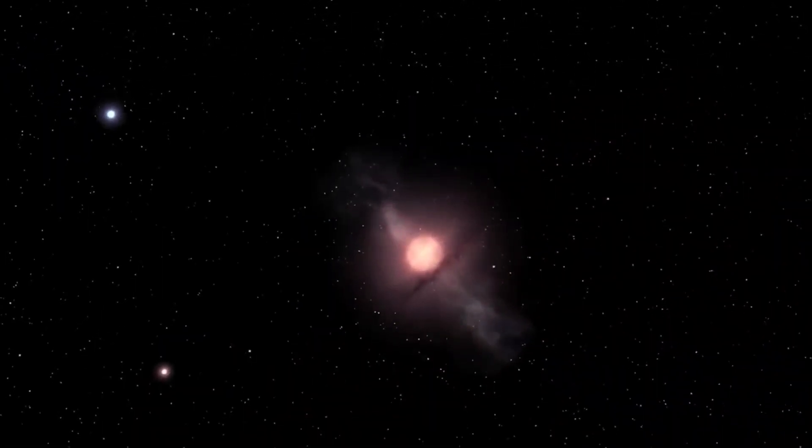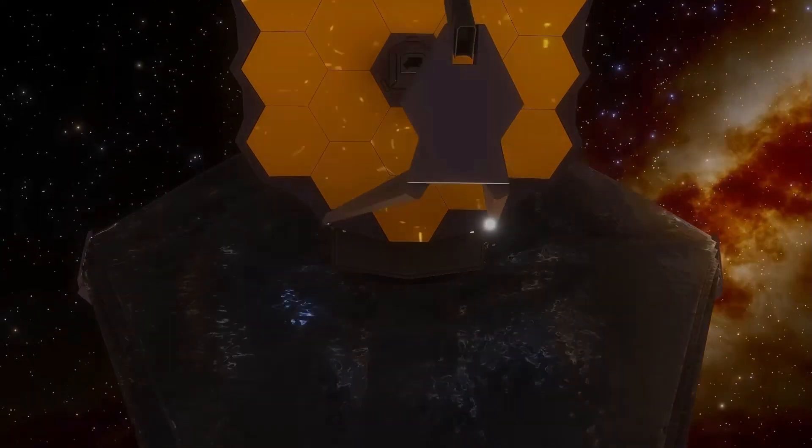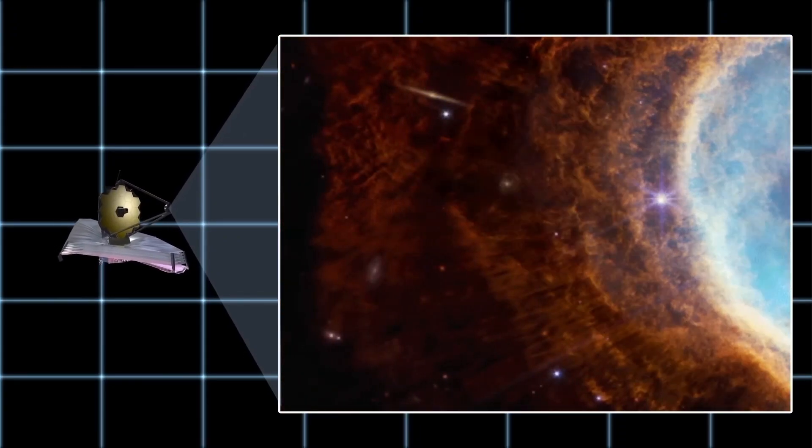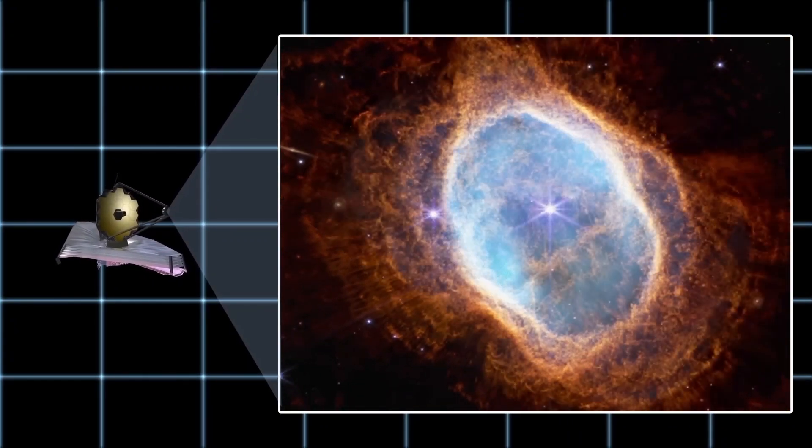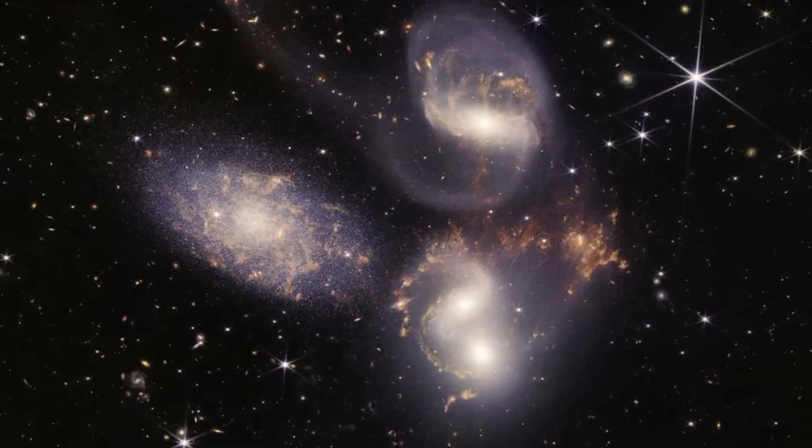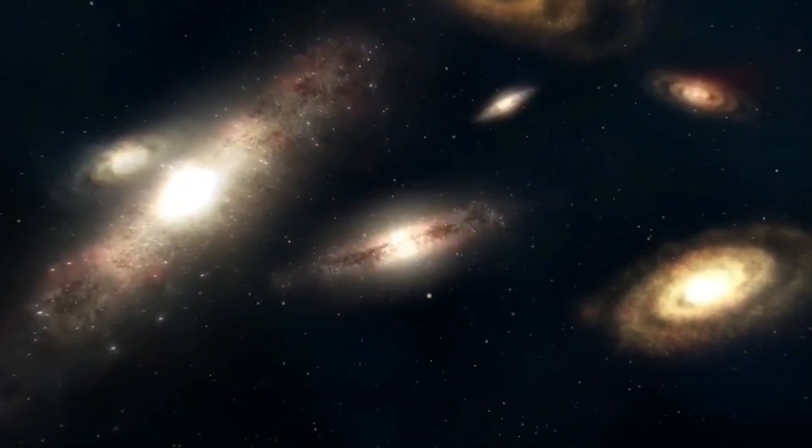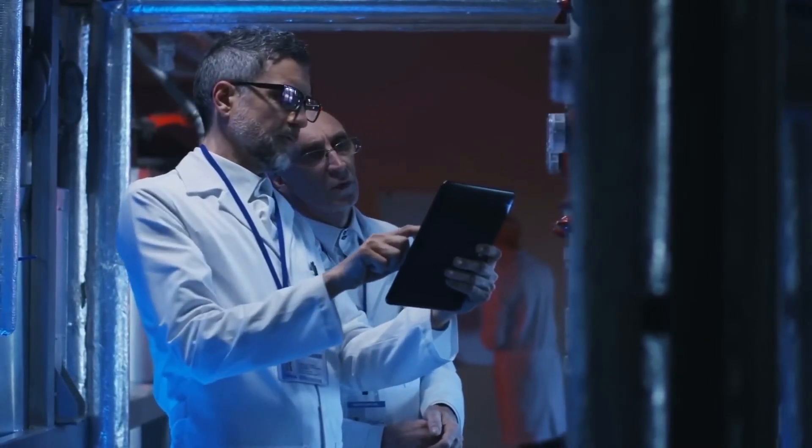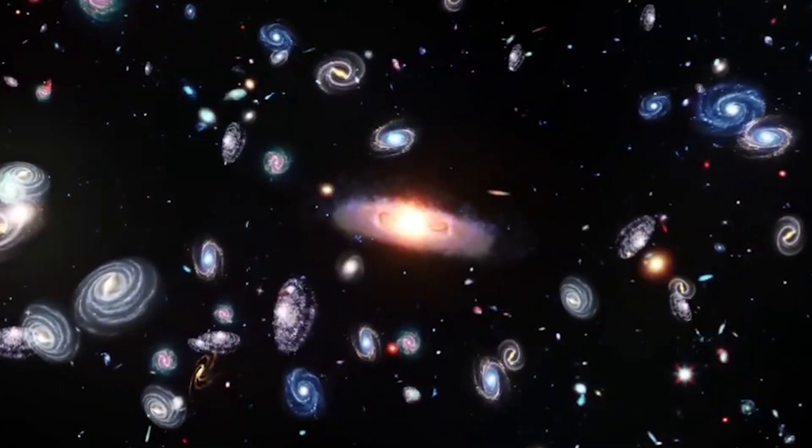The James Webb telescope has provided valuable data on distant galaxies and the formation of molecules in space. For example, it discovered a carbon molecule called methyl cation around a young star in the process of creating planets, shedding light on cosmic chemistry. James Webb has improved our understanding by picking up subtle signals from distant sources thanks to its high infrared sensitivity. Its advances in the understanding of galaxies and cosmic chemistry are due to its unique ability to observe in the infrared, revealing hidden aspects of the early universe.